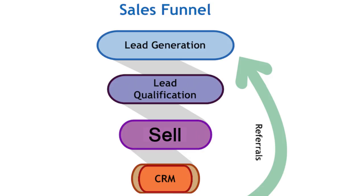In that first video I showed you the marketing funnel, and here is a sales funnel — there are some slight differences. In a sales funnel you have lead generation, lead qualifications, selling, and then CRM. You'll find multiple versions of a sales funnel online, but this is the simplest one to start with. Lead generation means you are finding people who could possibly be customers — identifying potential customers. Lead qualification means out of those people, you're trying to qualify which ones are actually the type of people you can sell to.